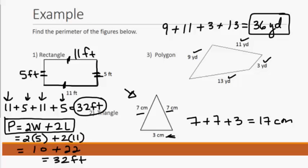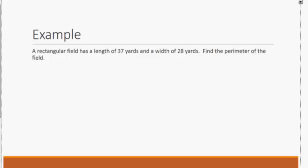Now let's look at an application with perimeter. A rectangular field has a length of 37 yards and a width of 28 yards. Find the perimeter of the field.